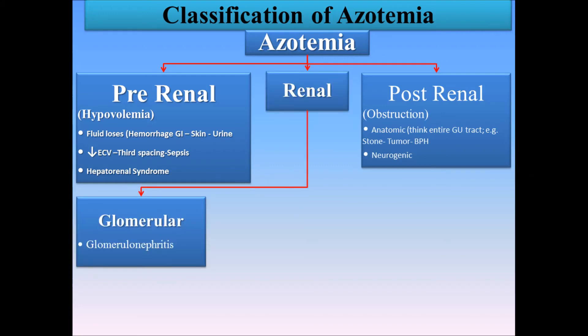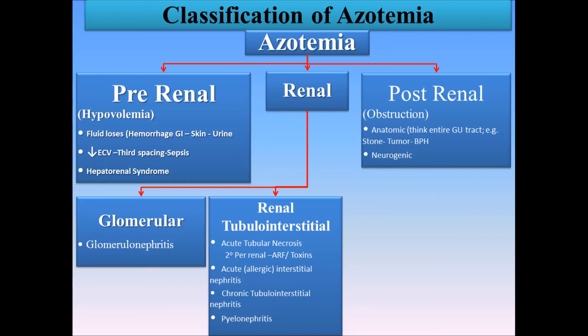In terms of renal azotemia, we can divide its etiologies into three parts. The first is glomerular — any kind of glomerulitis, whether infectious or inflammatory, can lead to renal azotemia. The second is tubular/interstitial, including acute tubular necrosis secondary to pre-renal azotemia, acute kidney injury due to toxins, acute or allergic interstitial nephritis, chronic tubular interstitial nephritis, and pyelonephritis.